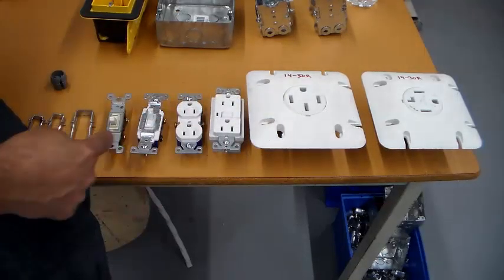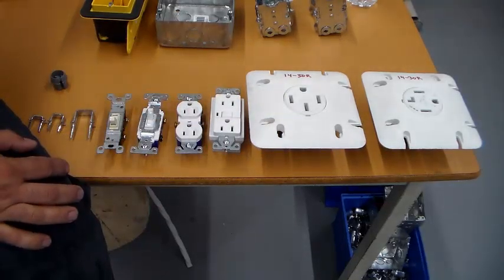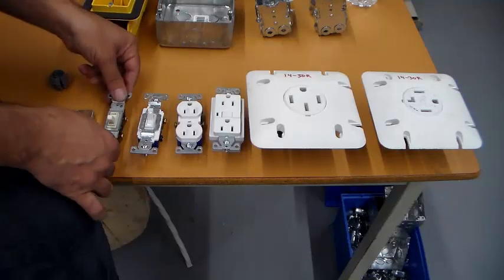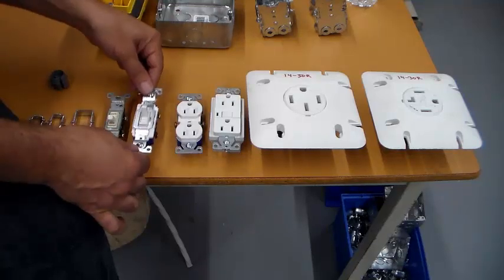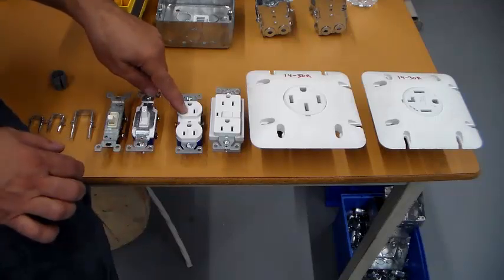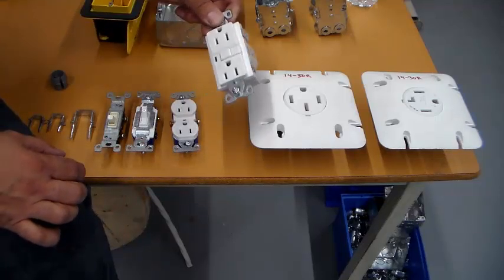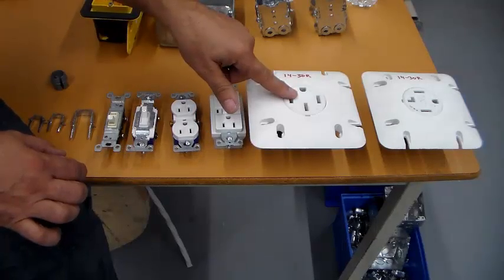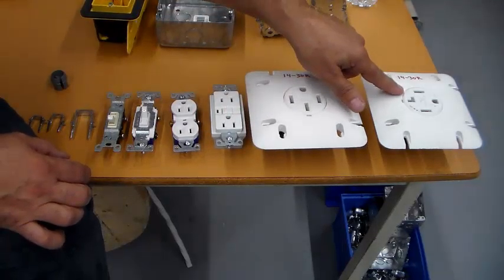Here are some of the devices you will be installing in your outlet boxes. You have a single pole switch, you have a three-way switch, a regular U-ground receptacle, a GFI plug, a stove receptacle, and a dryer receptacle.